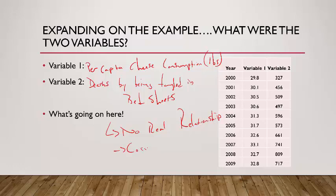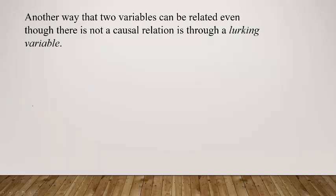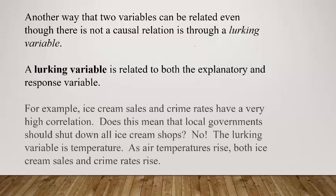This is important: correlation does not imply causation. It doesn't mean there's a causal relationship between the two variables. What's going on is that if you just look at the graphs of these two things over time, both variables are going up. There's another variable causing both of them to increase. This is what we call a lurking variable — a variable related to both the explanatory and response variable that's causing them both to go up over time.